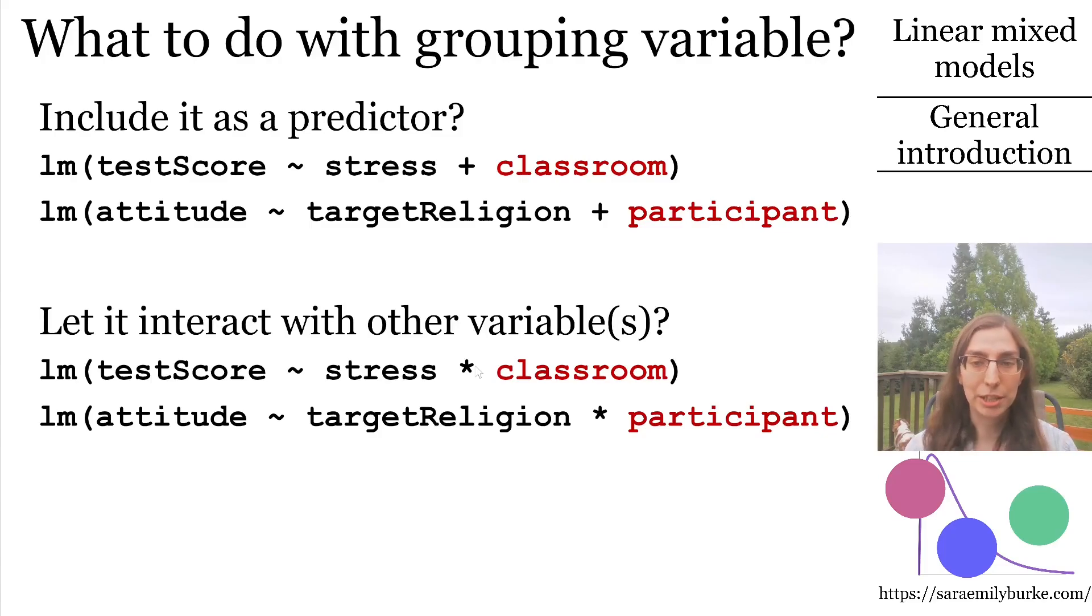You could maybe even let this grouping variable interact with the variables that you actually care about. What would happen if you did let it interact? Think about that for a moment. You should have an intuitive sense of this after the lessons on interactions and regression models. You would end up with a model that could give you a separate conditional slope for each level of the grouping variable.